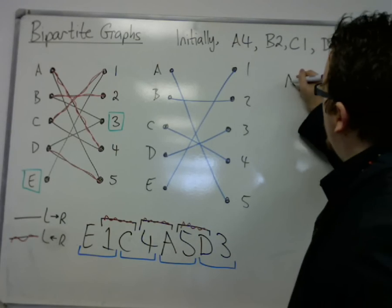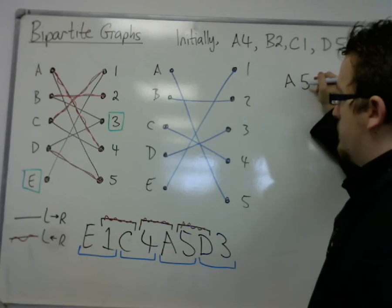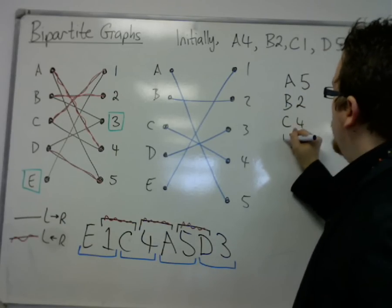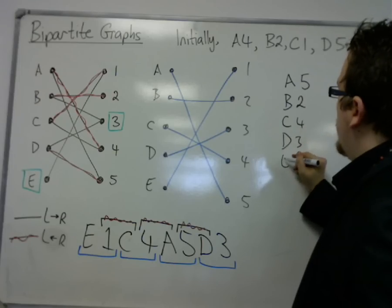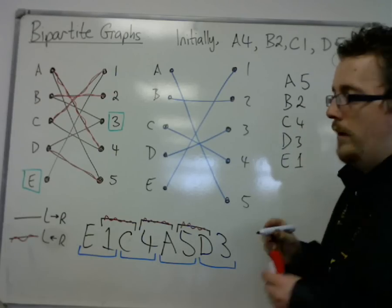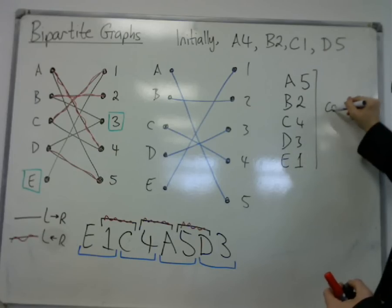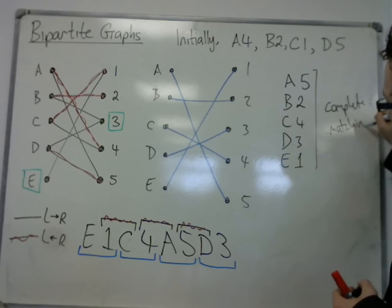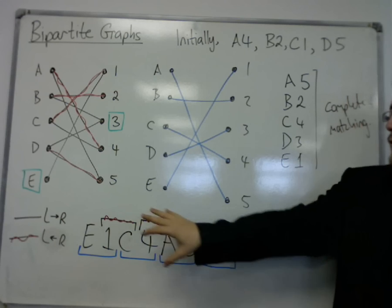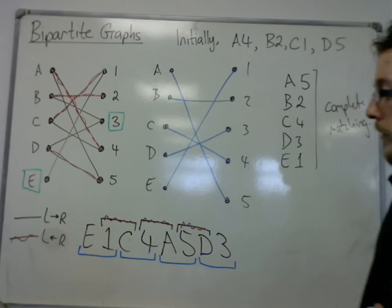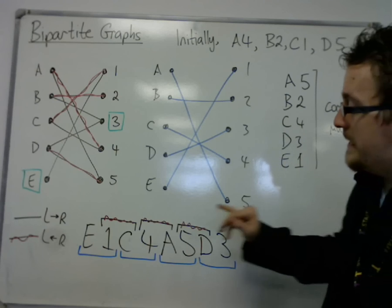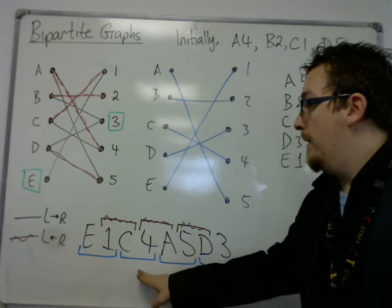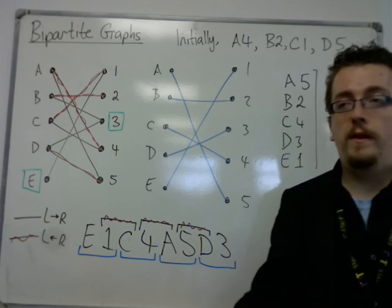So I finally write down that the final complete matching is A5, B2, C4, D3, and E1. And that is my complete matching. That's how the alternating path algorithm works. It's really this key step, making sure you can identify these ones are being deleted and being replaced with these four blue ones.